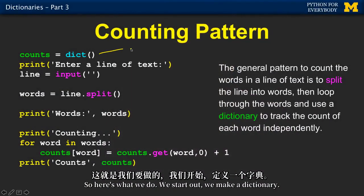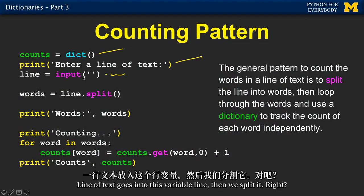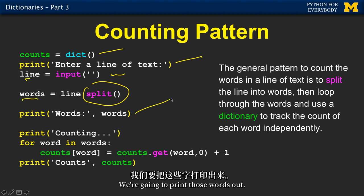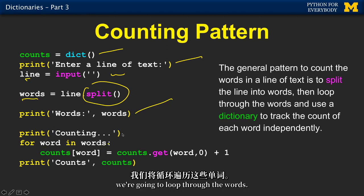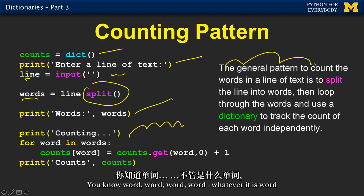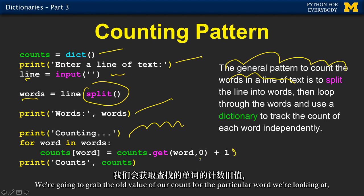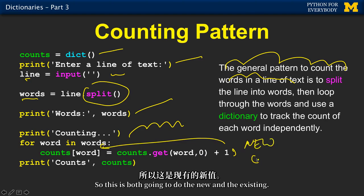So here's what we do. We start out, we make a dictionary. We read a line of text — that line of text goes into this variable called line. Then we split it, and we get back a list of words. We're going to print those words out. Then whatever that line was, we're going to loop through the words and update the count. We grab the old value of our count for the particular word we're looking at, or zero, add one to it, and stick it back in. So this handles both the new and the existing words.